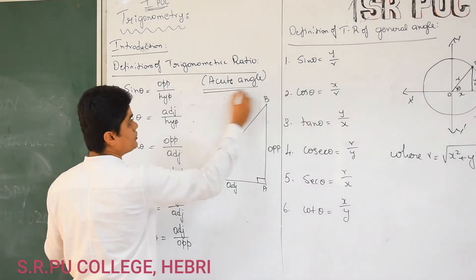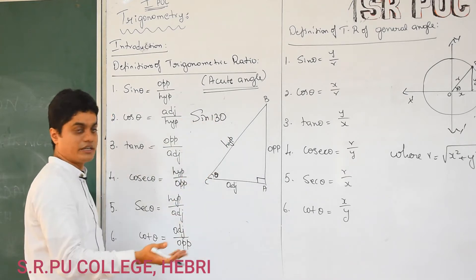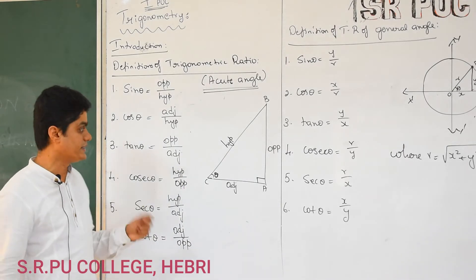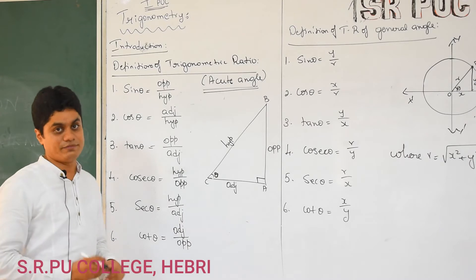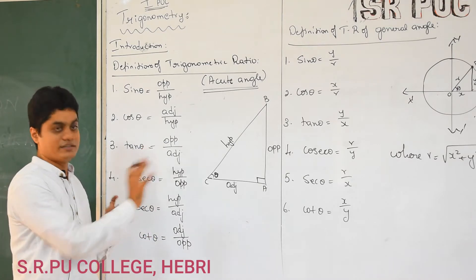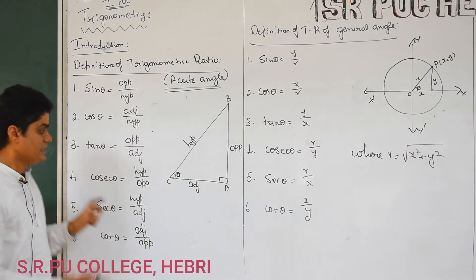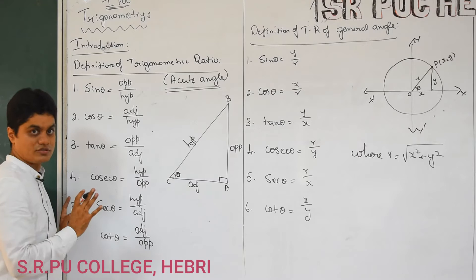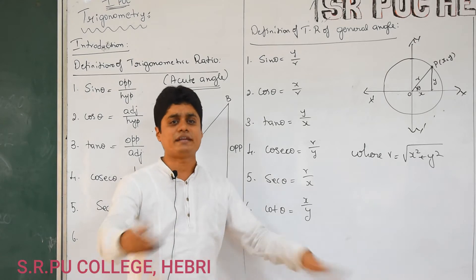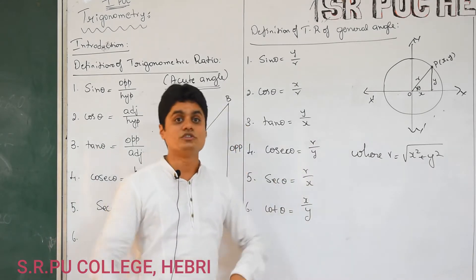This definition is only for acute angles. But you are going to define sin 130 degrees or even more. Since such angles exist and this definition is not possible for sin of more than 90 degrees or cos of more than 90 degrees, we need another definition. Maybe you didn't study this concept in 10th standard. I am going to introduce this in this year. The next definition holds for every angle theta, not just less than 90 degrees.